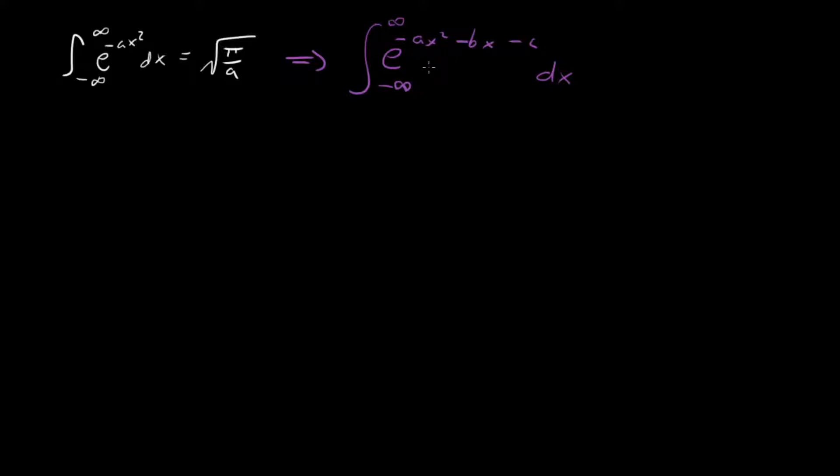The trick that we're going to try and use is to force this argument in the exponent to look something like it does on the left, because then we can just use this result on the left hand side and then we're set. And so how are we going to do that? Well, one thing that we can do is by completing the square.